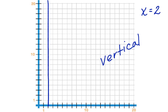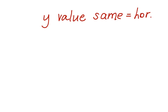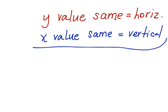Alright, let's review this information. If we have a Y value that stays the same, we have a horizontal line. If we have an X value that stays the same, then we have a vertical line. Using these rules, you can understand the graphs of horizontal lines and vertical lines.